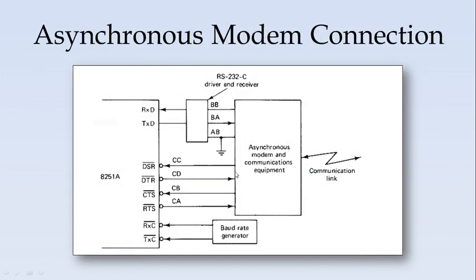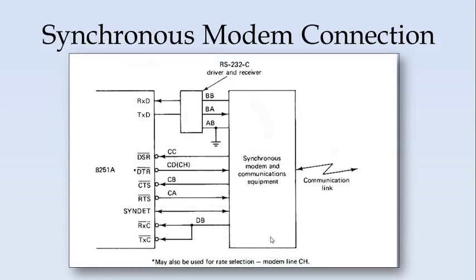In asynchronous modem communication, the receive data pin and transmit data pin are connected to the asynchronous modem communication equipment. The DSR, DTR, CTS, and RTS pins are all connected for modem handshake. The receiver clock and transmitter clock are provided by an external baud rate generator, since in asynchronous mode there is no common clock. In the case of a synchronous modem connection, the clock is provided by the synchronous modem itself, so no external baud rate generator is needed. RS-232C is used for level conversion — if the external modem operates at RS-232 voltage levels rather than TTL logic levels, RS-232C provides the voltage conversion between the different logic levels.